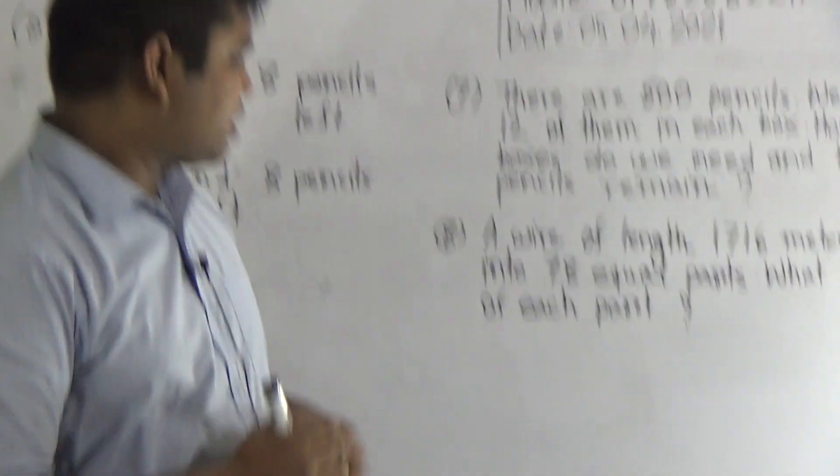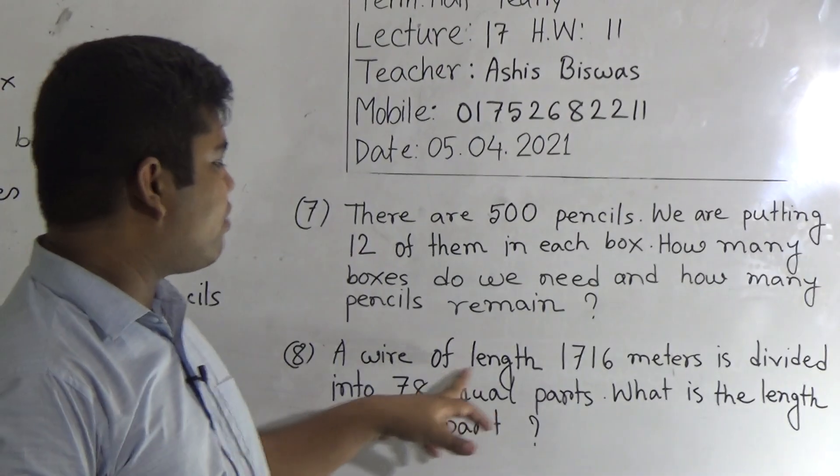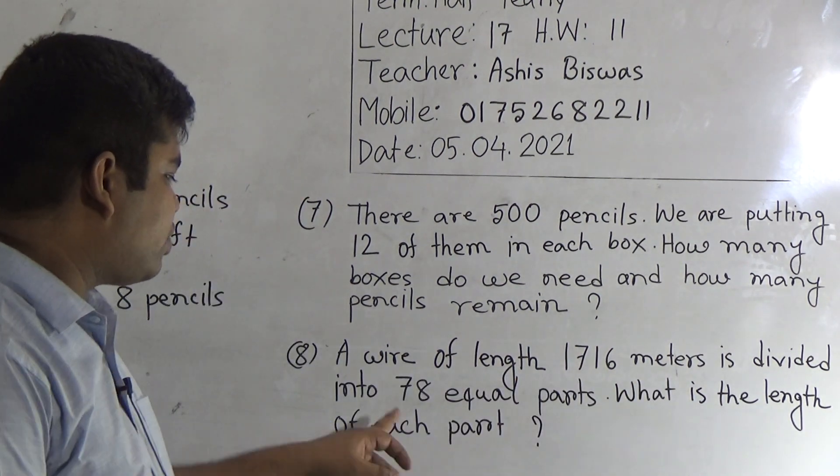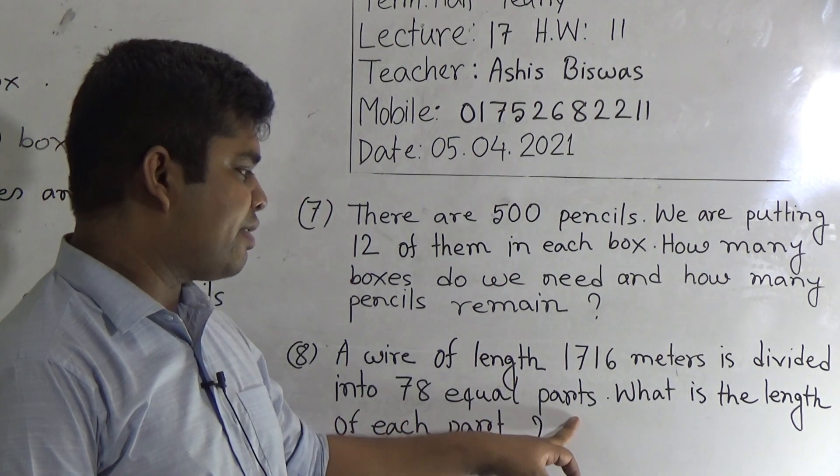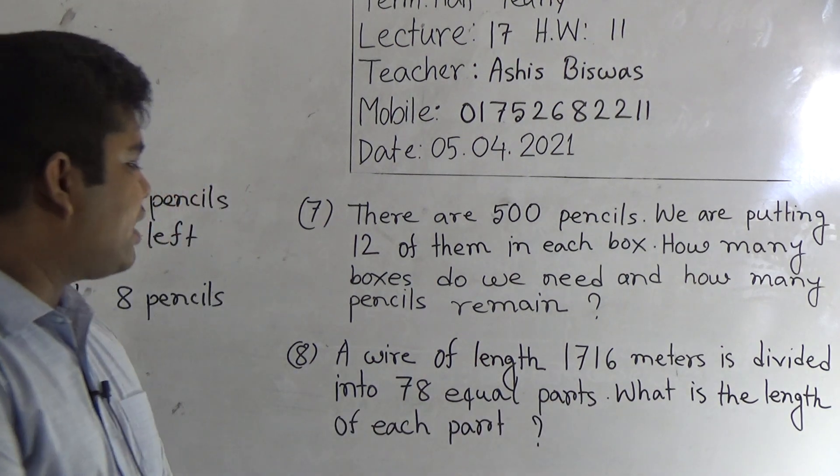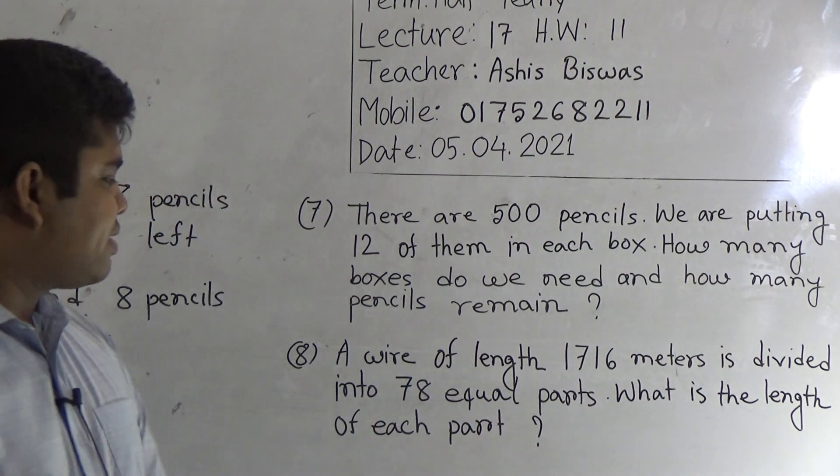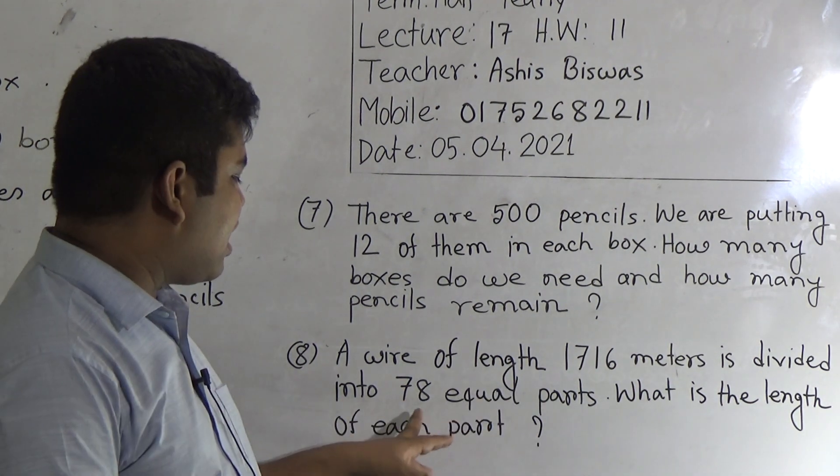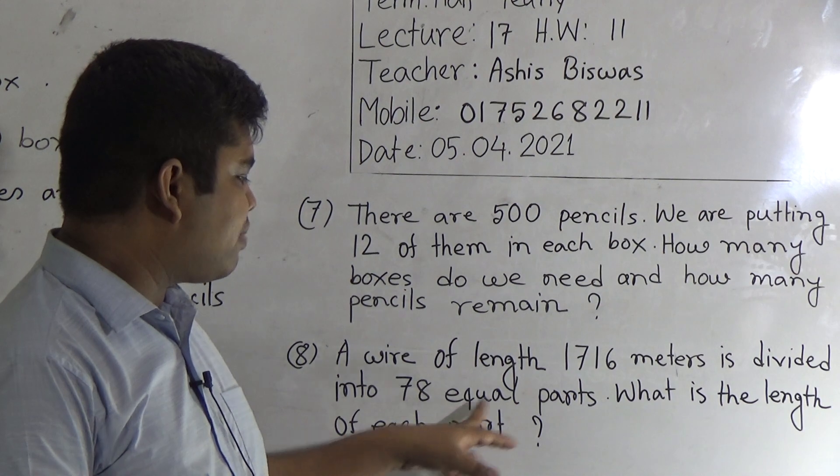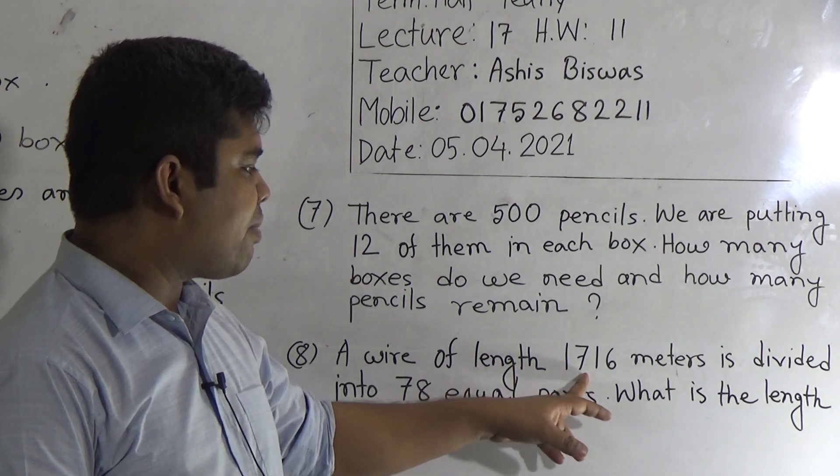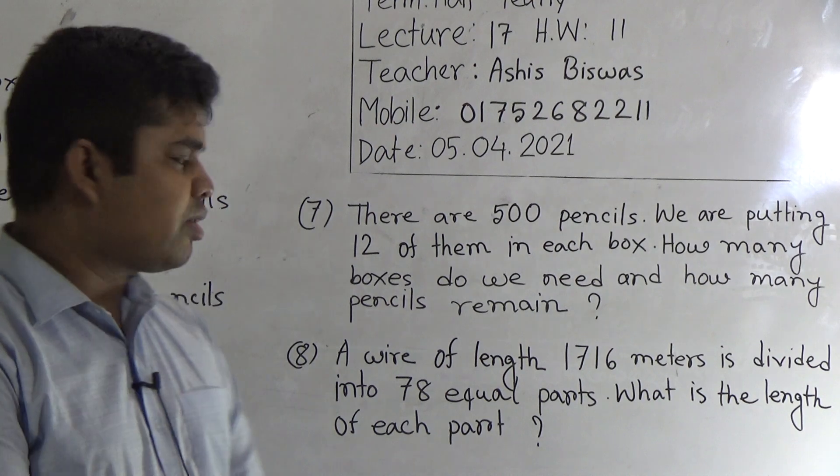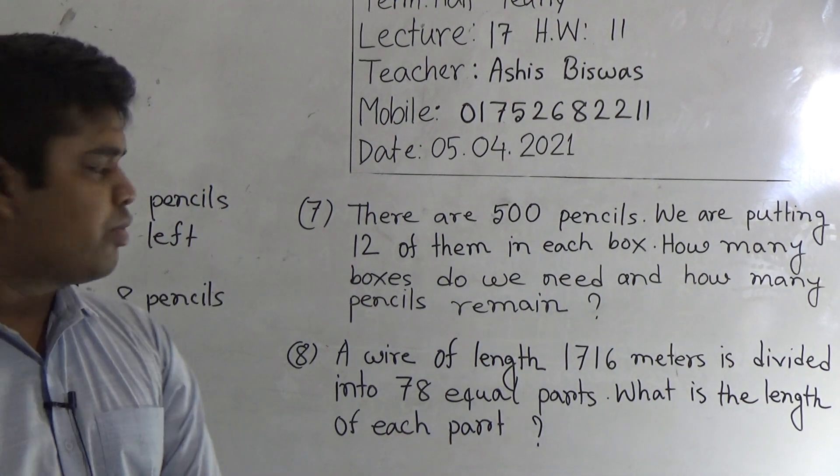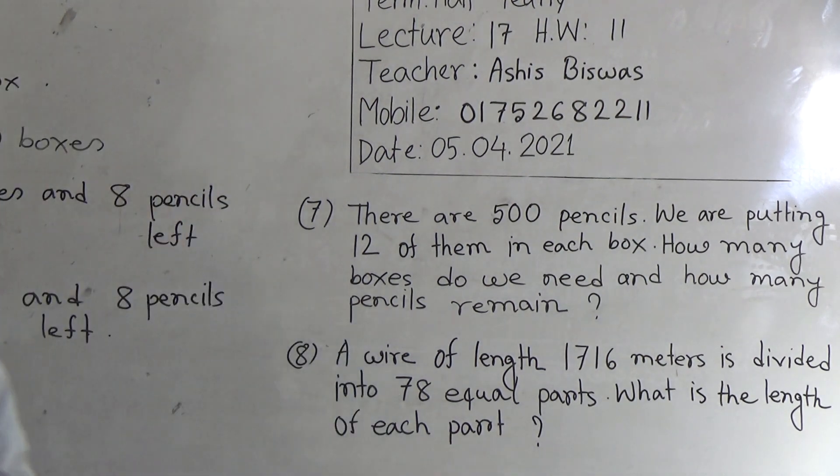Please at first we read the question. A wire of length 1716 meters is divided into 78 equal parts. What is the length of each part? That means, total 78 equal parts means the length of the 78 parts of the wire is 1716 meters. So the length of one part were equal to how much? We do division and we get the answer.